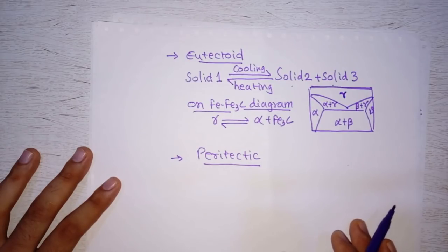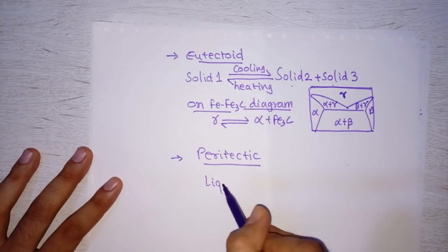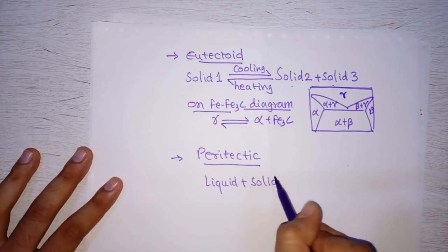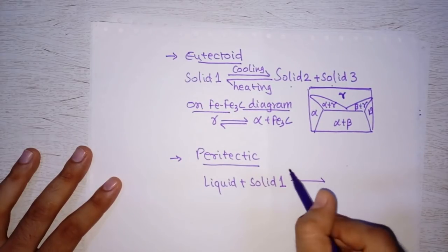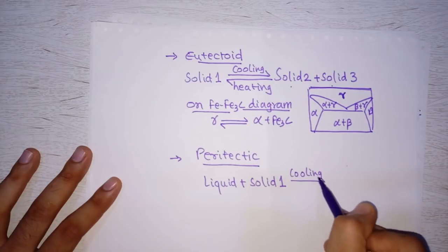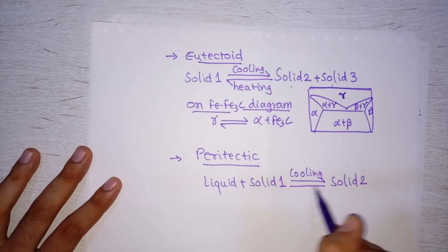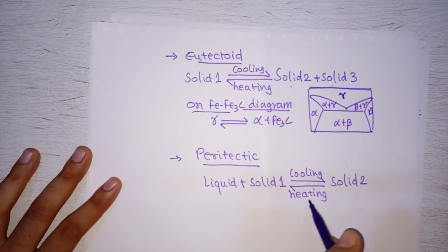The next reaction is peritectic reaction. The definition of peritectic reaction says: at some high temperature, suppose we have liquid plus solid 1, then by cooling it we get solid 2. The reverse is also true — if we heat solid 2, we will get liquid plus solid 1.